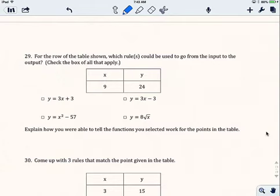For the row of the table shown, which rules could be used to go from the input to the output? Check the box of all that apply. So this is a multiple selection problem, so be careful about that. There's more than one answer that could be right.